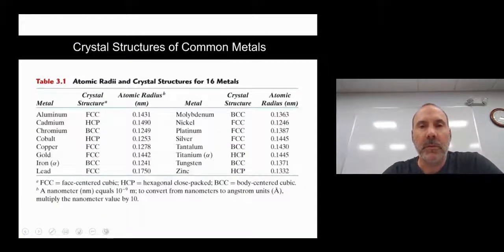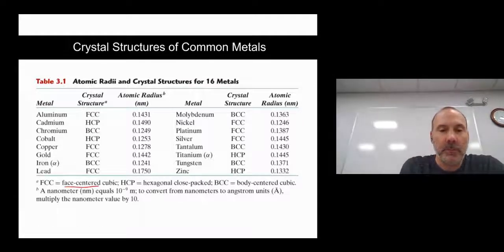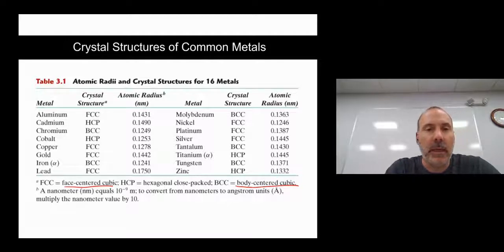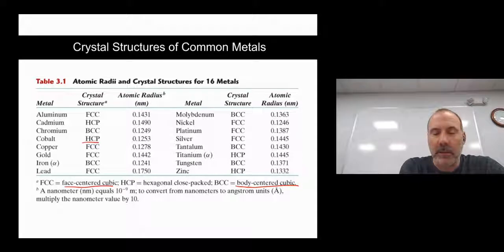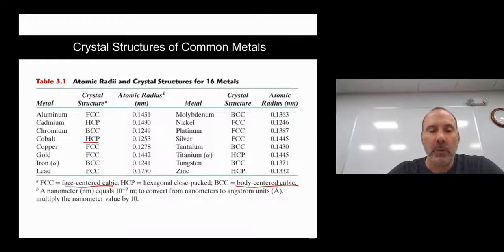The two types that we're going to look at is what's called face-centered cubic and body-centered cubic. That's where we're going to focus this class, and you can see many of the common metals have one of these two types of structures. We're also going to talk just very briefly about the hexagonal closed-pack system, but we're going to focus all of our calculations on the face-centered, FCC, or BCC, body-centered.